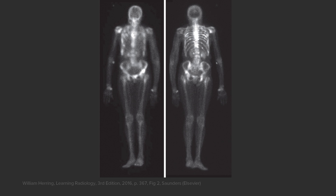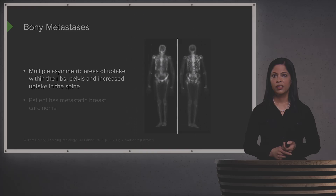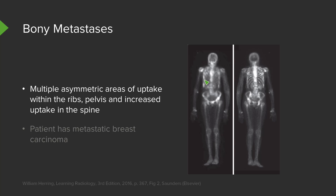Let's take a look at this bone scan and see how it looks different from the one we just saw. You can see multiple asymmetric areas of uptake within the ribs, asymmetric from the other side. There are areas of increased uptake within the pelvis — the left side stands out much more significantly than the right. There's also asymmetric uptake within the shoulder, with the right shoulder having more uptake than the left. This patient has metastatic breast carcinoma, and these areas of uptake are related to bony metastases.